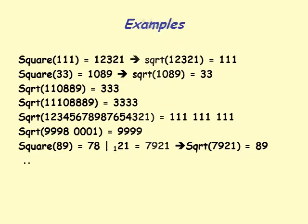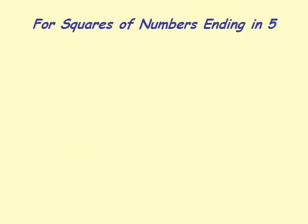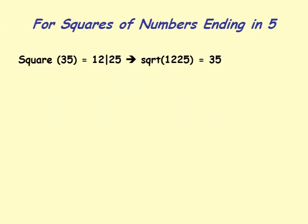Let's look at squares of numbers ending in 5. We know square of 35 is 1225, so square root of 1225 must be 35. We split 1225 in two: 25 is on the right, and 12 is on the left. If we can find two factors of type n times (n+1), we know n is the left digit. So 12 equals 3 times 4, giving square root 35.